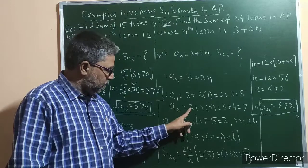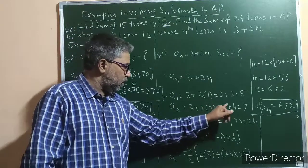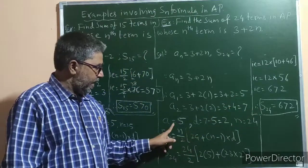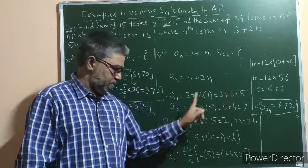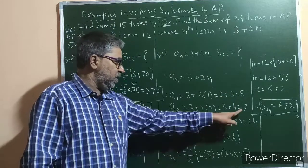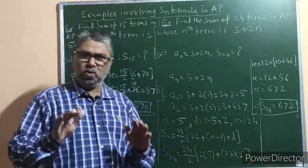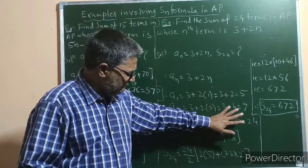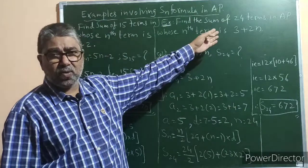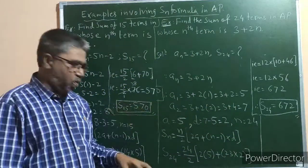Now find a2 by replacing n by 2: a2 = 3 + 2(2) = 3 + 4 = 7. So a1 = 5, and d = a2 − a1 = 7 − 5 = 2. We are asked to find the sum of 24 terms, so n = 24.